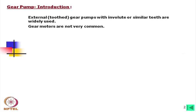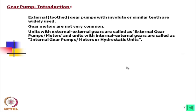Gear motors with different teeth such as orbit motors are very popular. However, the involute teeth gear motor is not that popular because it is not much beneficial to use such units as a motor. Units with external gears are called external gear pumps and motors, and units with internal gears are called internal gear pumps or motors. They are usually called hydrostatic units.